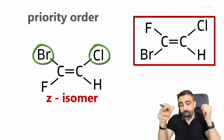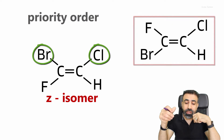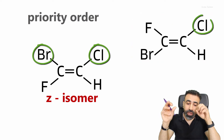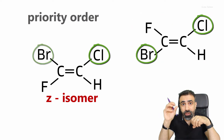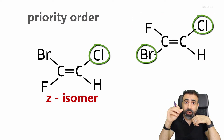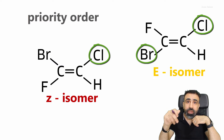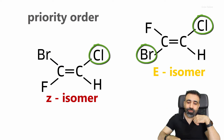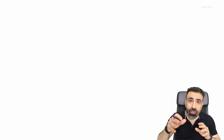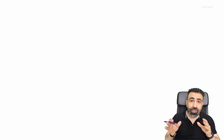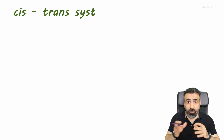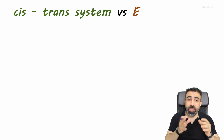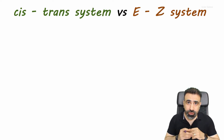While for the other isomer, the chlorine and bromine are on opposite sides of the double bond, so it is called the E-isomer. Let me show you an example where we can apply both the cis-trans system and the EZ system for naming geometric isomers.